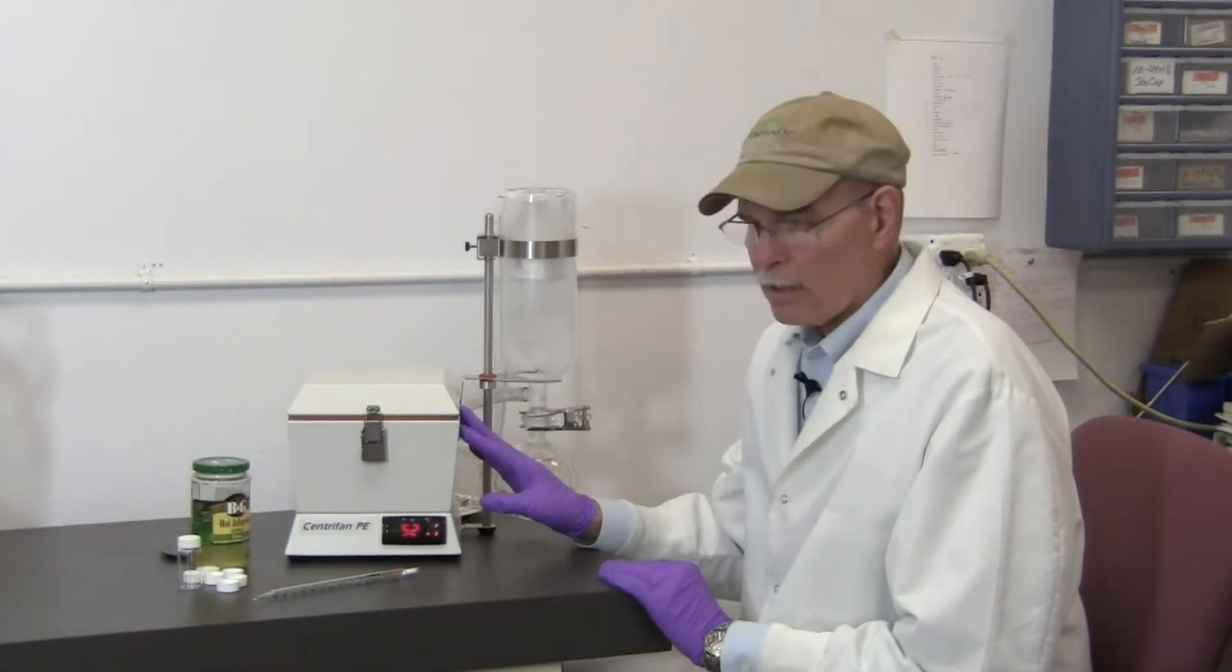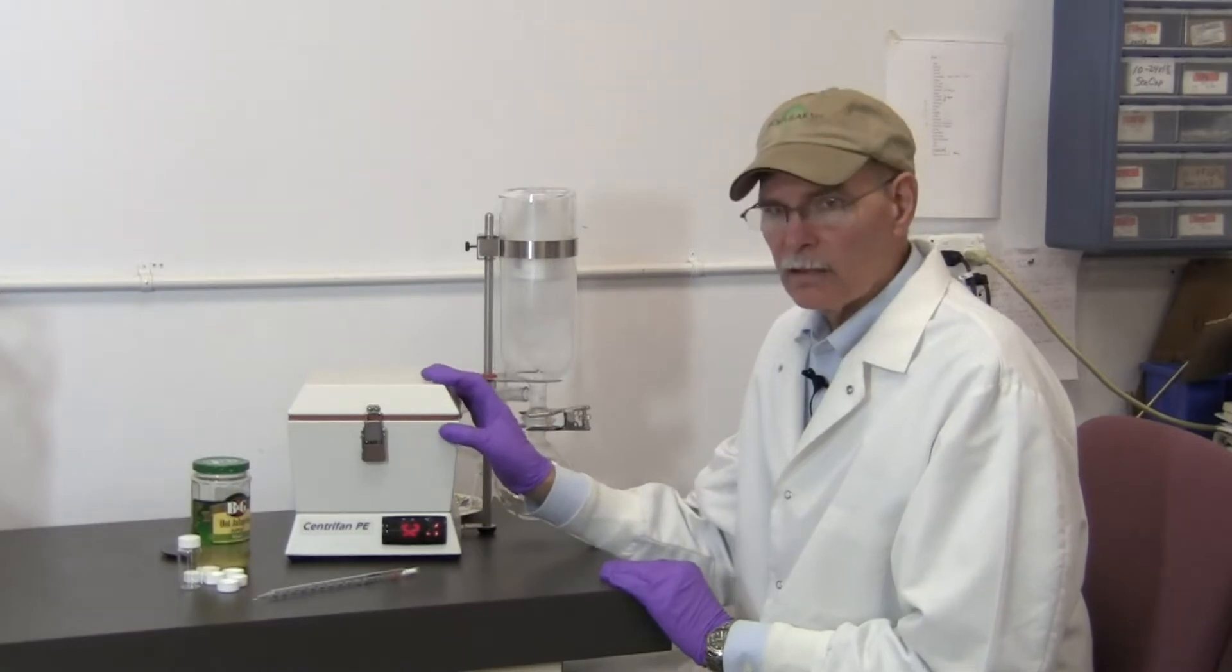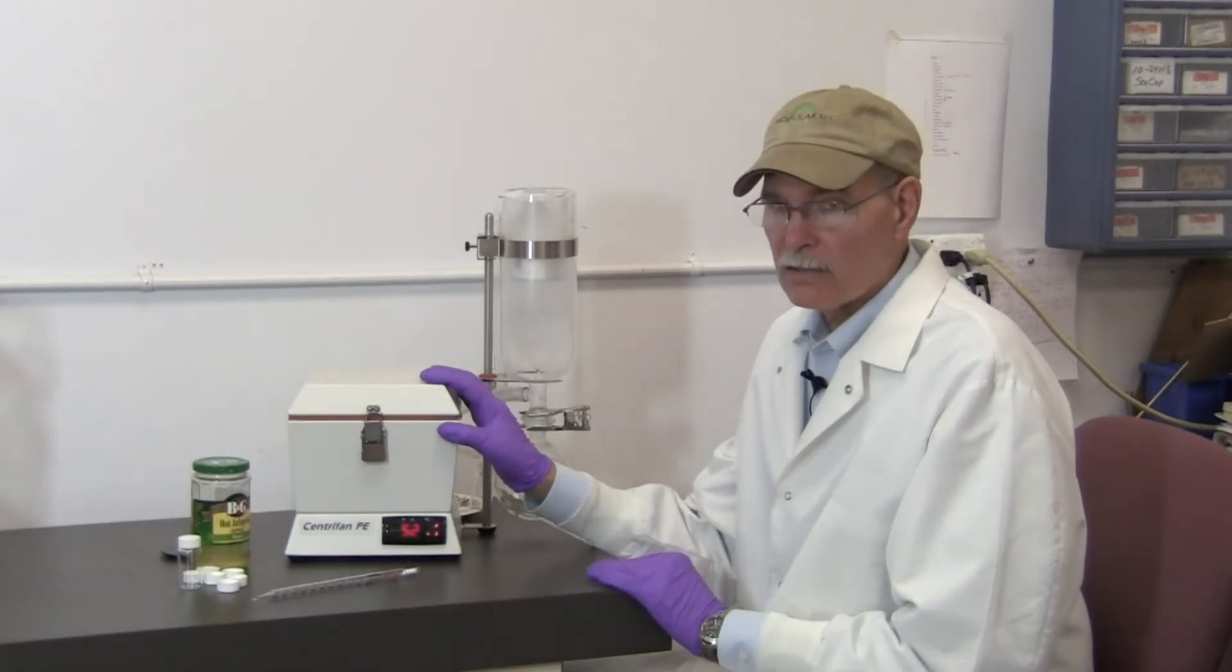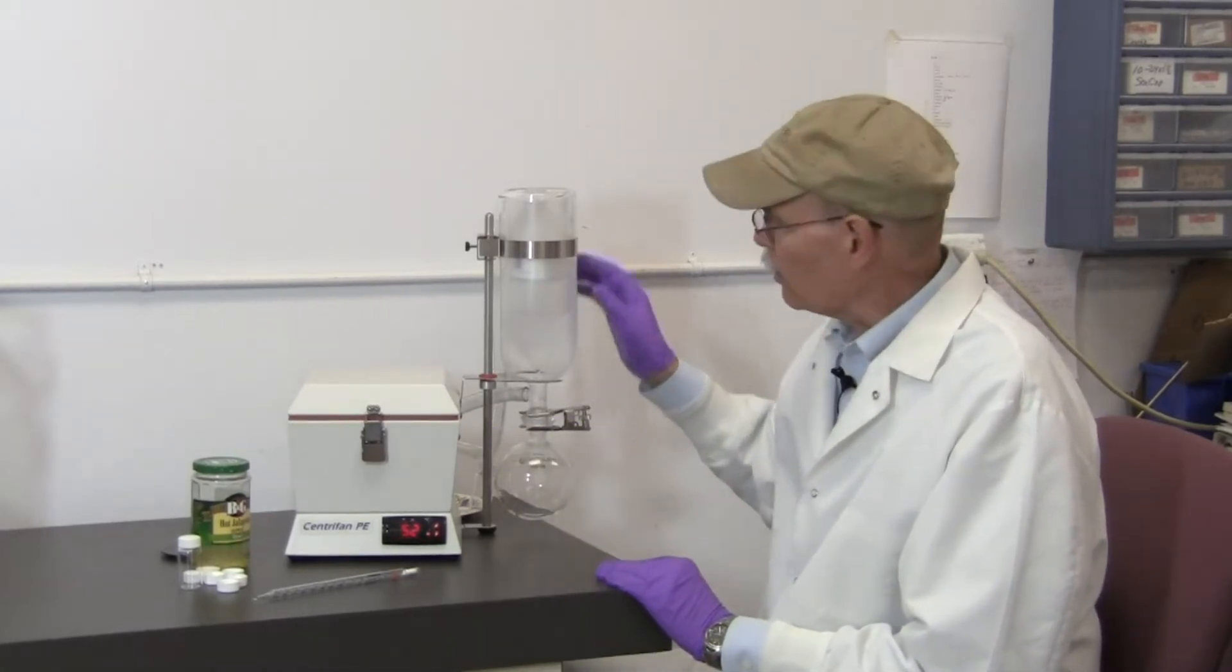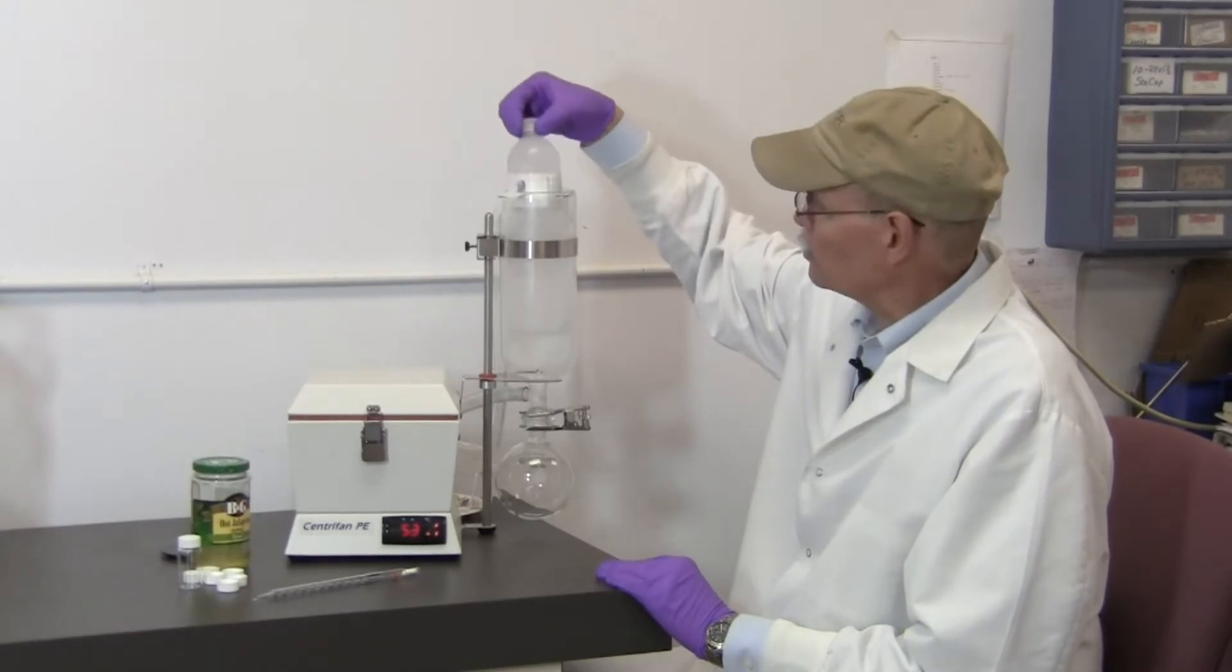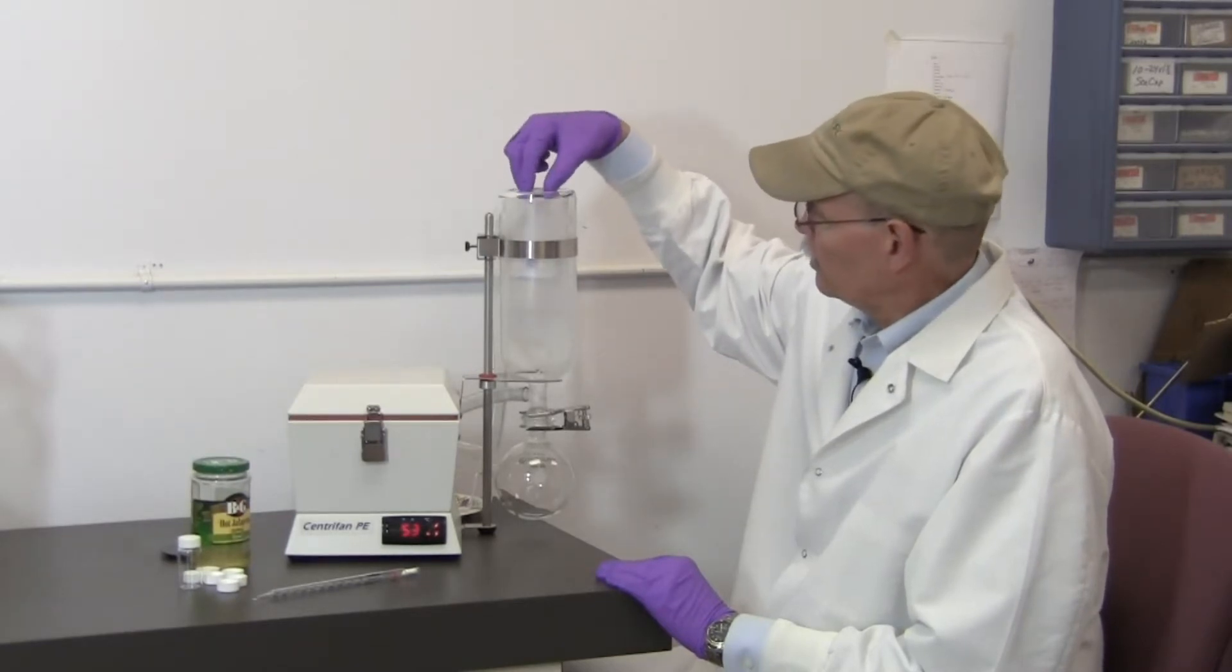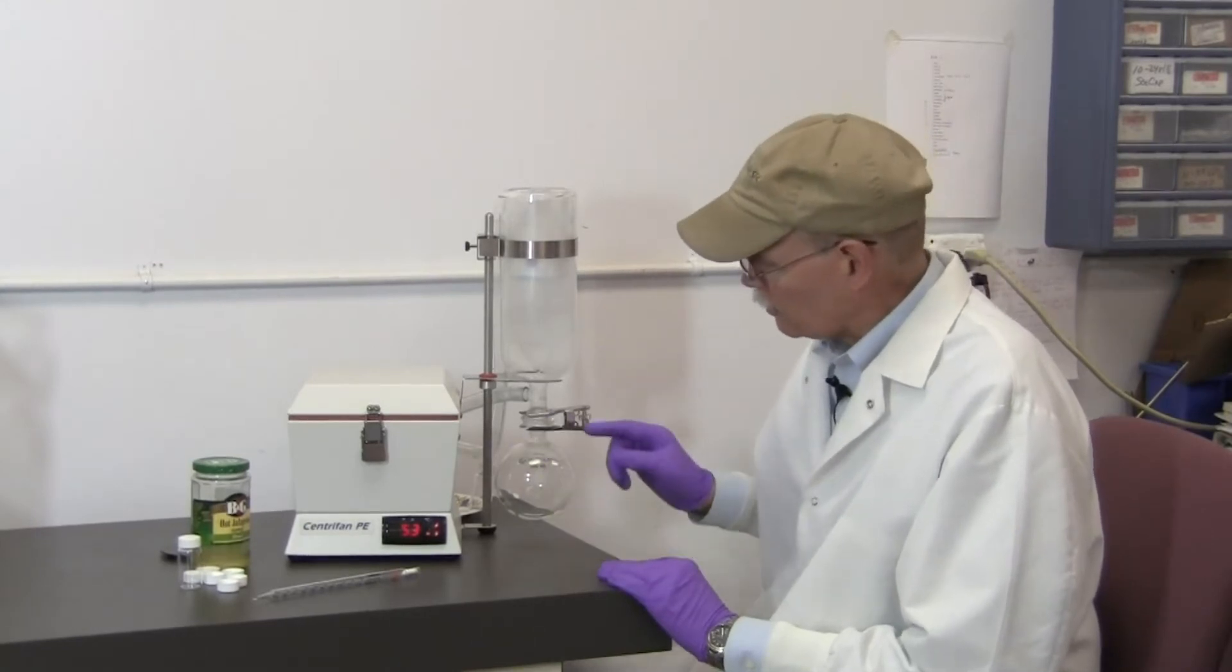This is a device which evaporates, volatilizes any liquids that you put in here and then recondenses them in this cold trap. I have a frozen water bottle as a source of cold for condensing the vapors that are coming across from the Centrifan.